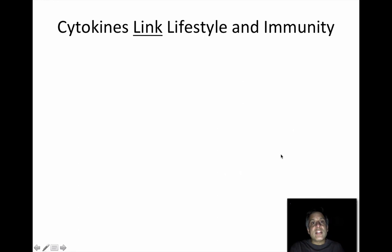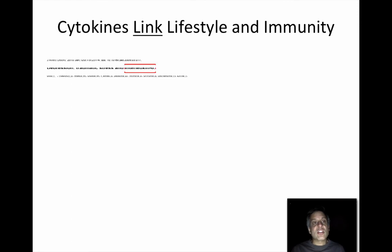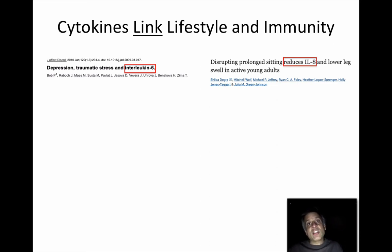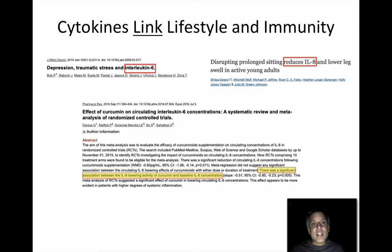How do we take those cytokines and link them to lifestyle and immunity? You'll see studies like the connection between depression, traumatic stress, and elevated interleukin-6 — telling us that our emotional state can actually raise our cytokine levels. Or disrupting prolonged sitting, which can lower the pro-inflammatory interleukin-8. Or curcumin, the active ingredient in turmeric, which has been shown in a meta-analysis to lower IL-6. Positive lifestyle behaviors can lower that chronic inflammatory effect.